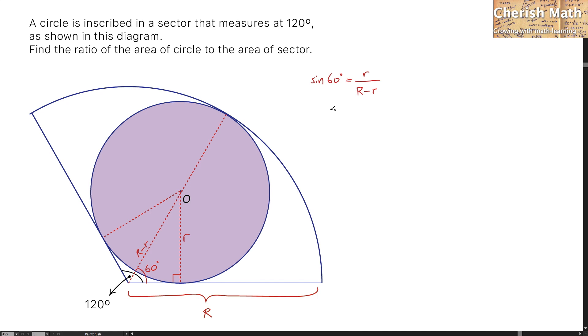Sine 60 degrees is in fact square root of 3 divided by 2. And I'm trying to make lowercase r as the subject. I'm going to name this as my first equation.